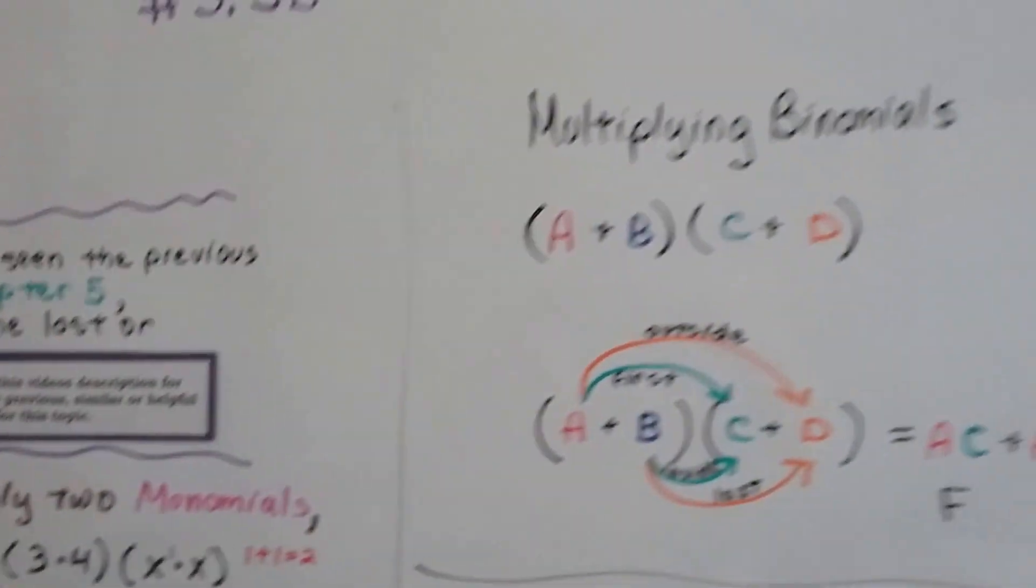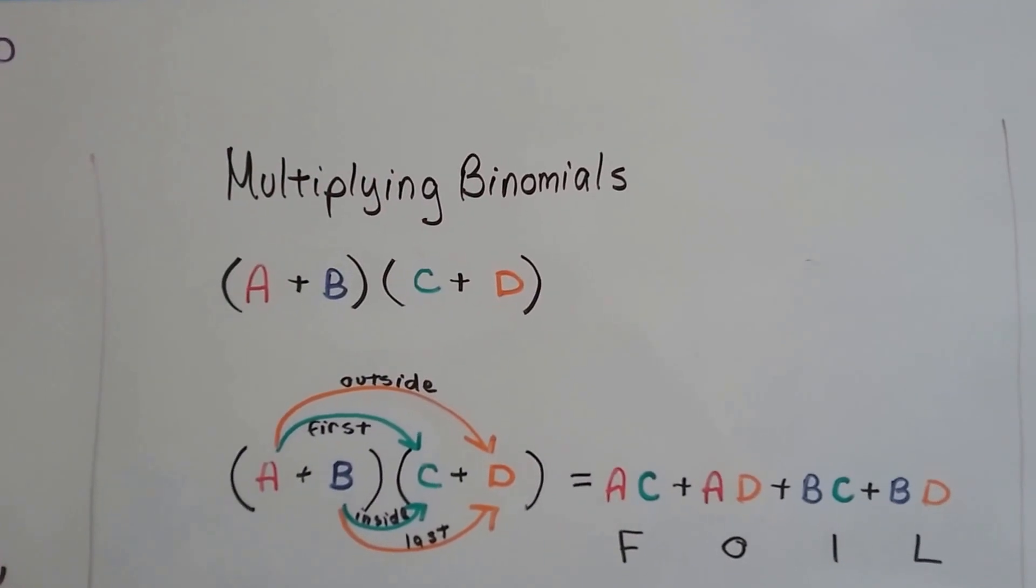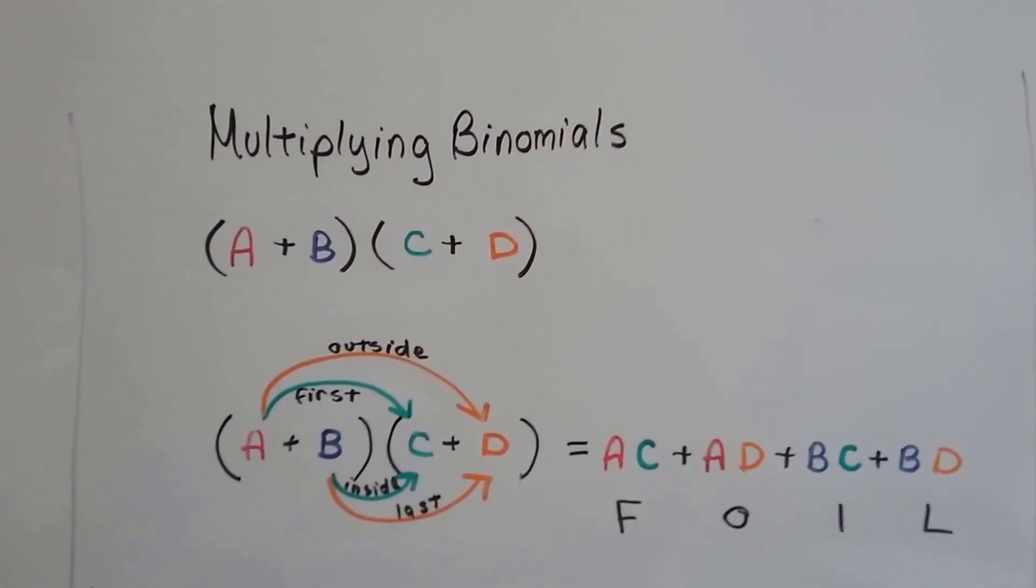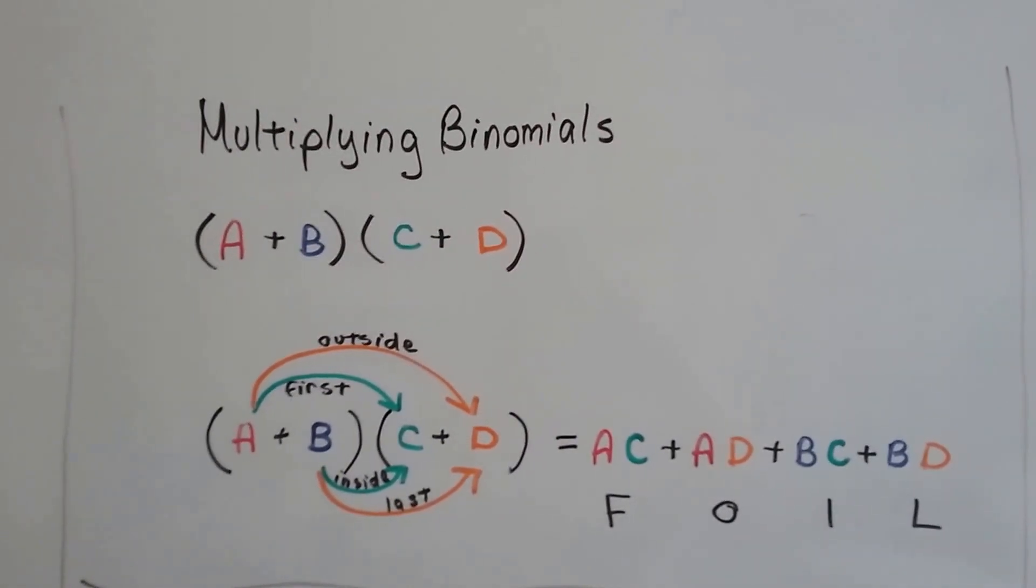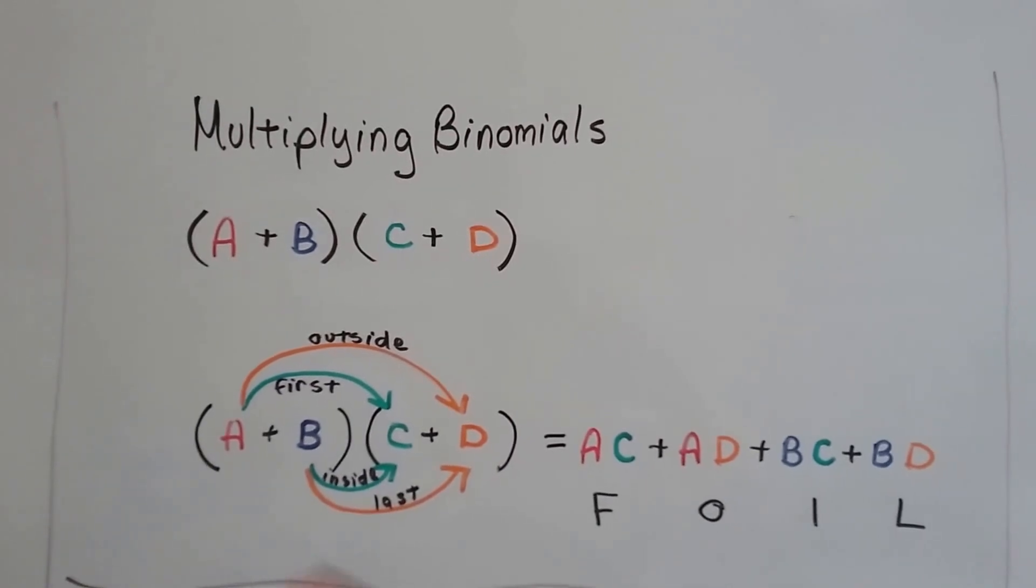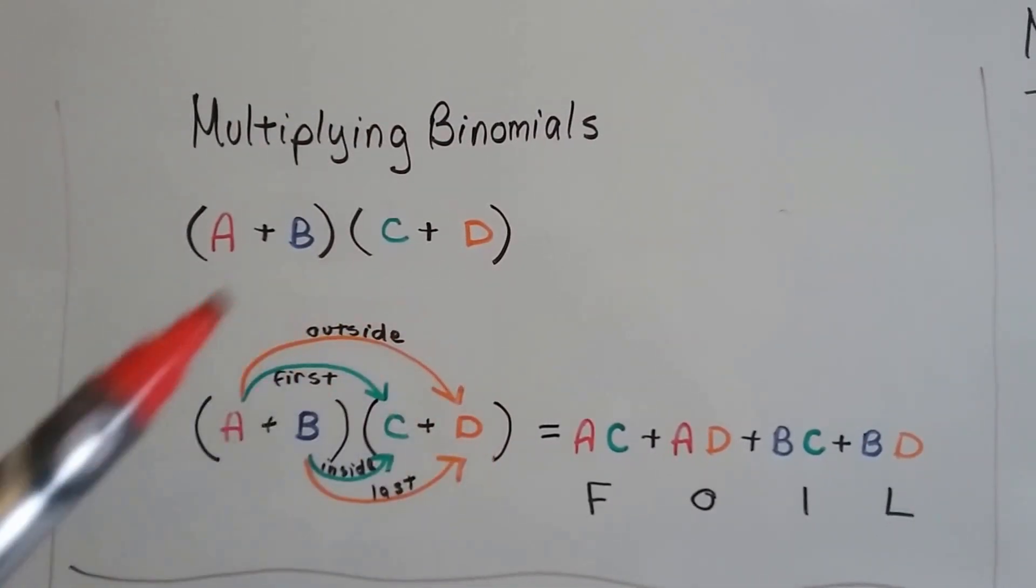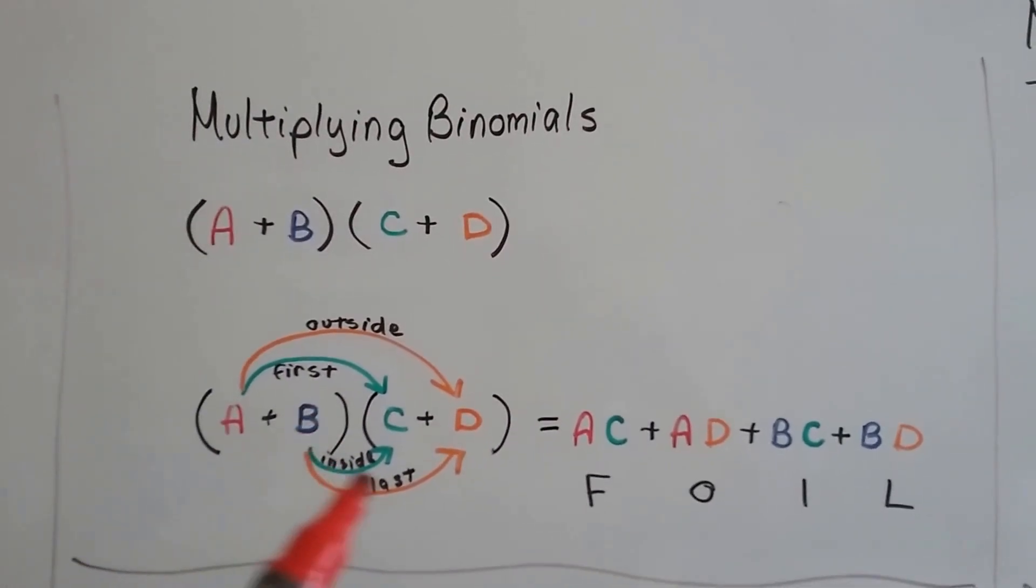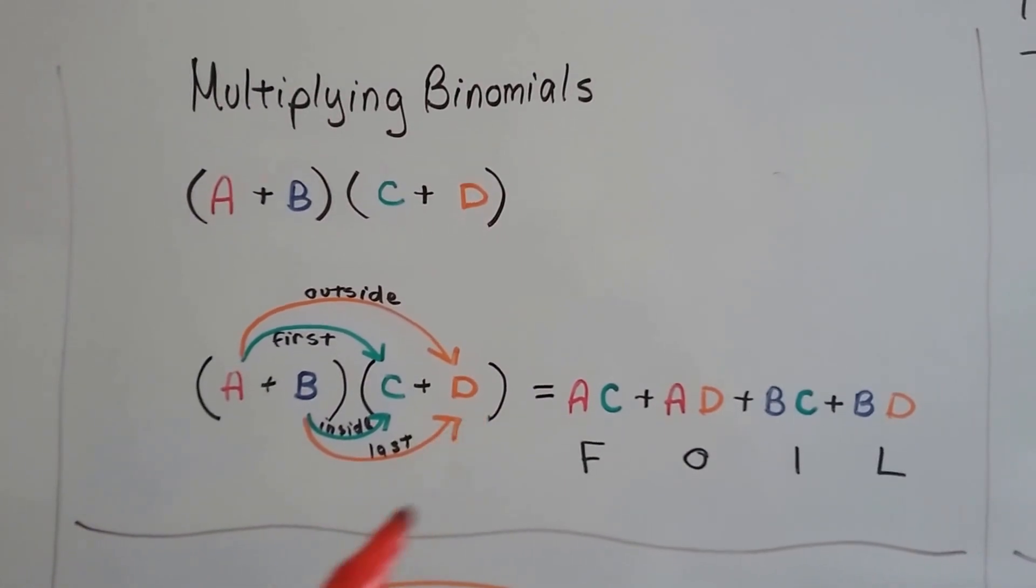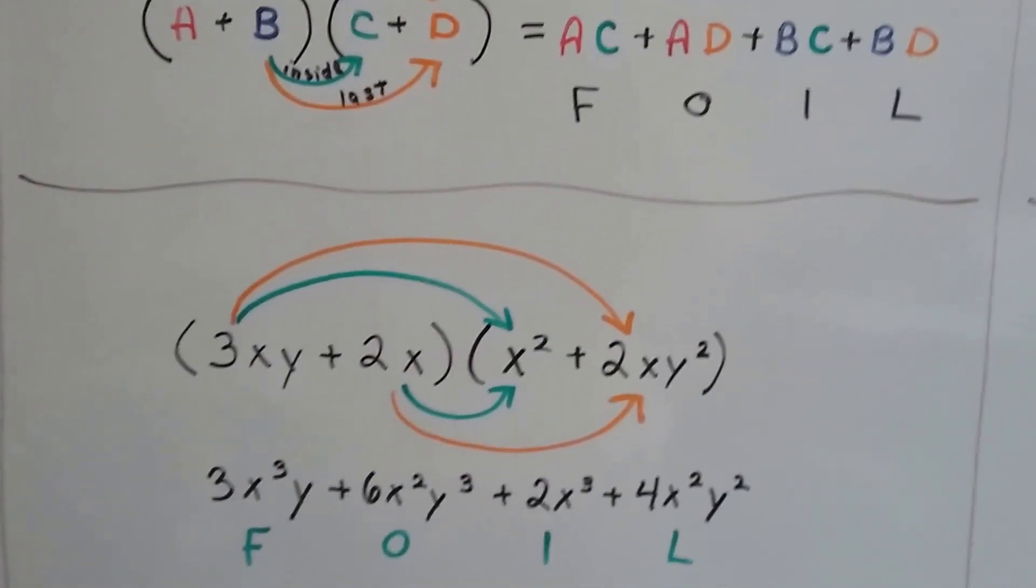So for multiplying binomials, if we've got a plus b times c plus d, what we do is we FOIL. The first one we do is the a times the c. Then we do the outside. That's the o in FOIL. We do the a times the d. It's the two outside ones. Then we do the two inside ones. The b and the c are on the inside. Then we do the last one, b and d.